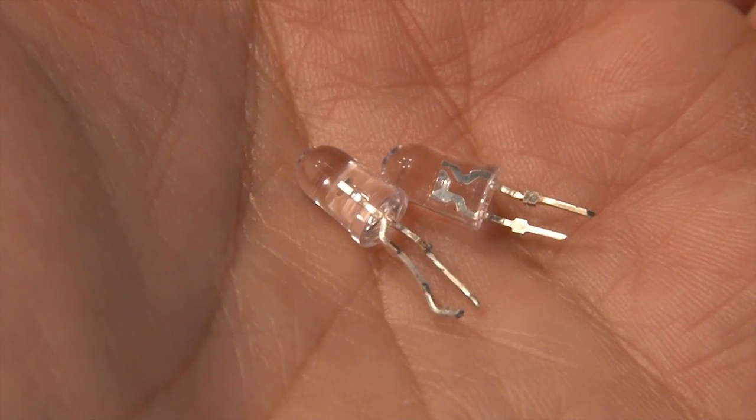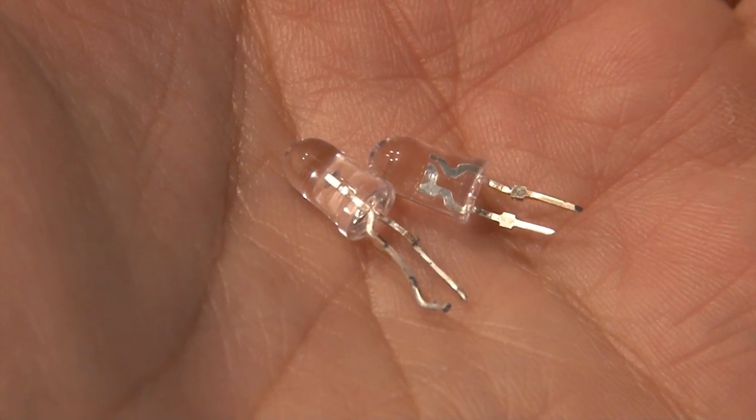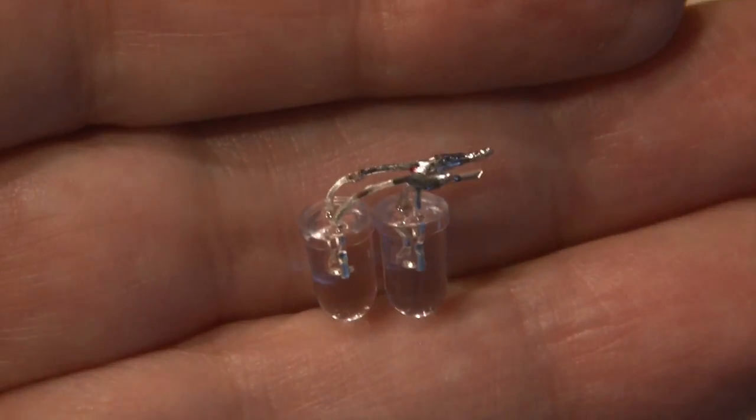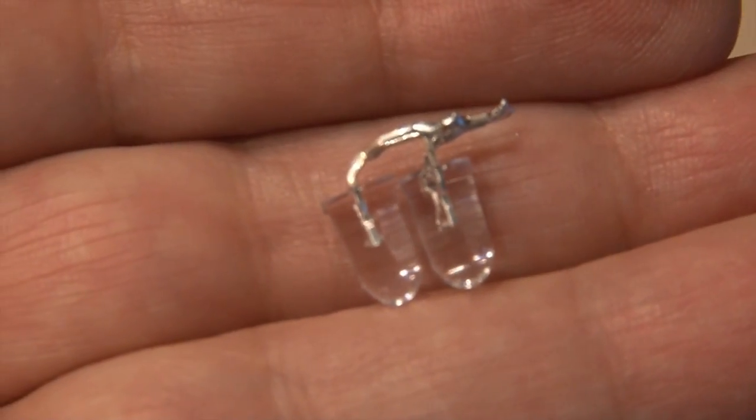Then I dug through my giant box of LEDs and found two small, high-intensity white LEDs. Now the leads will be shortened and they'll be soldered in series. Nice and compact.